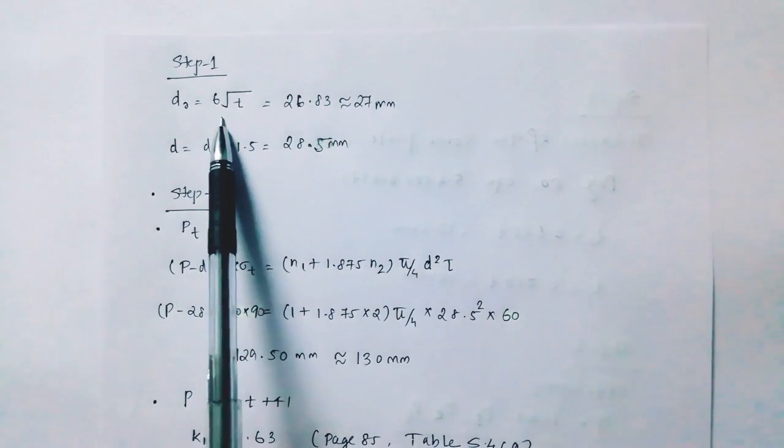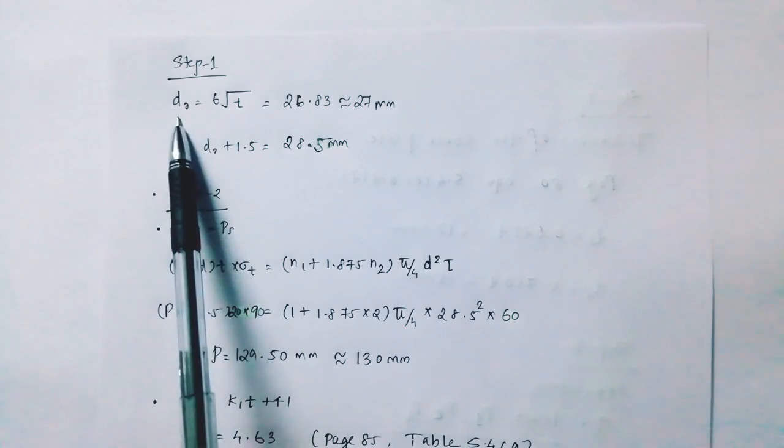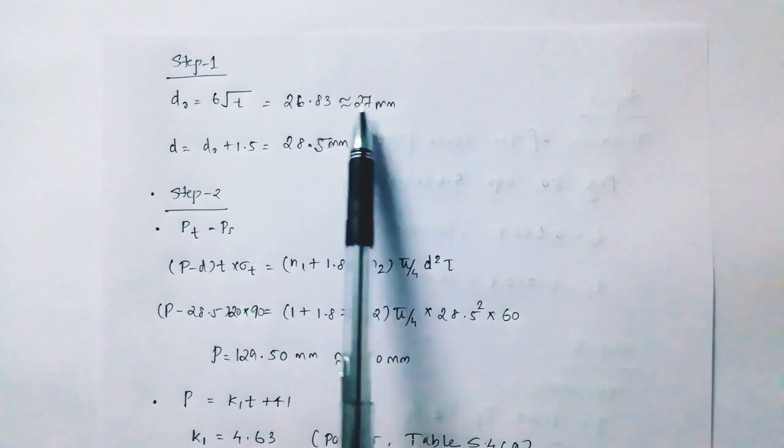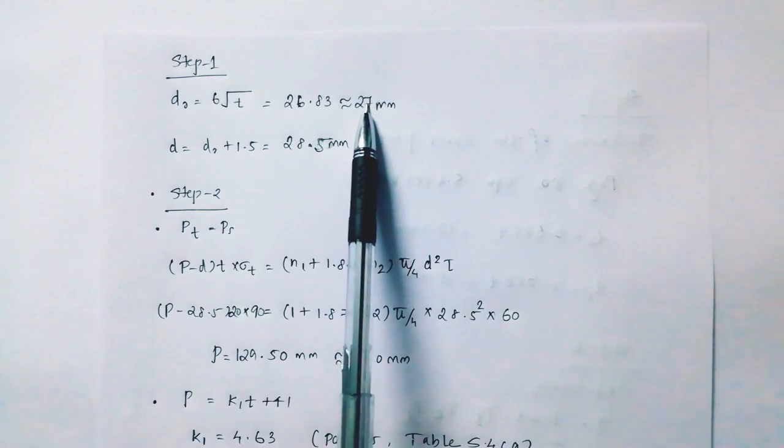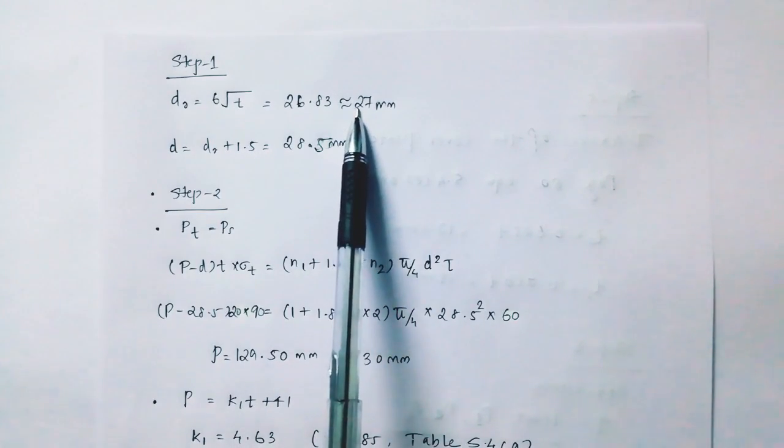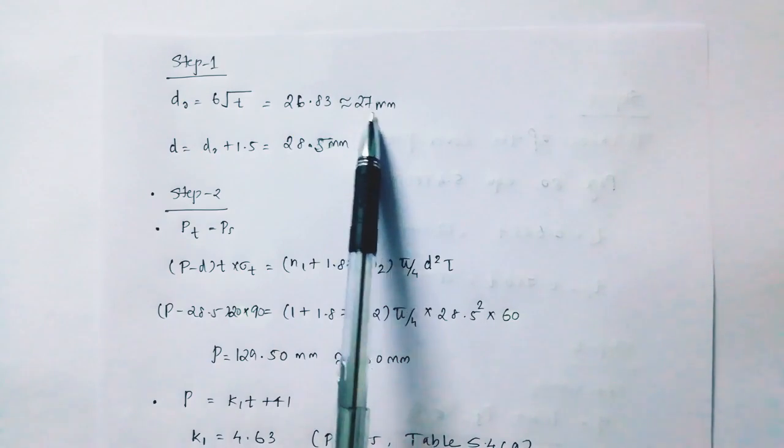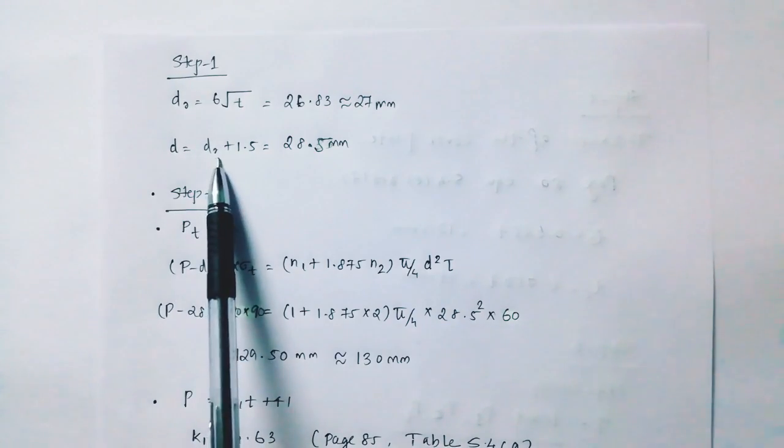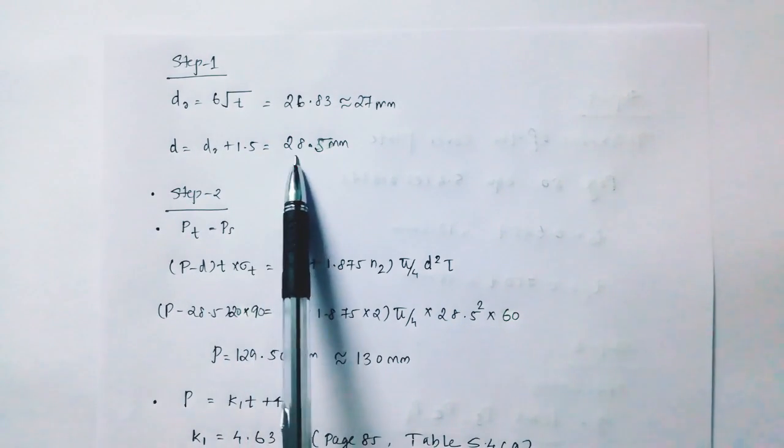Step 1 is to find bolt diameter. d subscript 0 equals 6 root t equals 26.83 equals 27 mm. Then, d equal to d subscript 0 plus 1.5 equal to 28.5 mm.